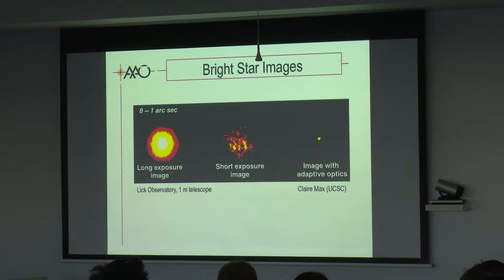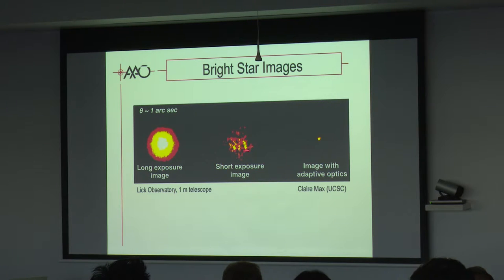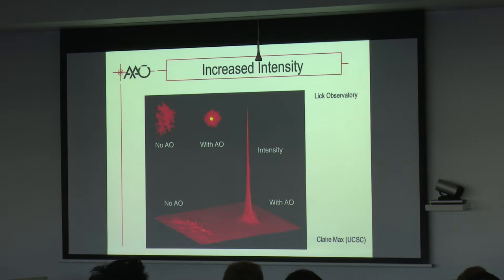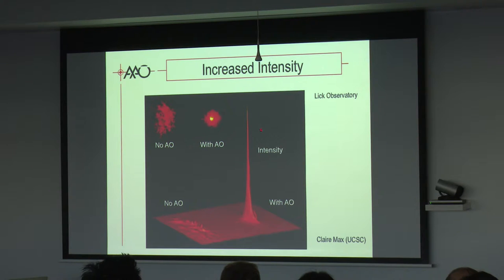To summarize: we have the long-exposure image due to the speckles and image motion, then we have the short-exposure image which shows speckles, and then we have the corrected image which is near the diffraction limit of the telescope. You can see there is a huge intensity gain when the AO is switched on, and that leads to a lot of scientific gains and performance.